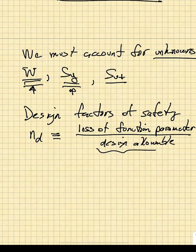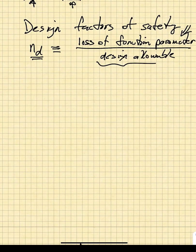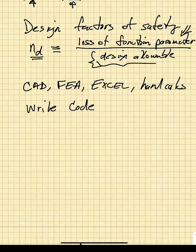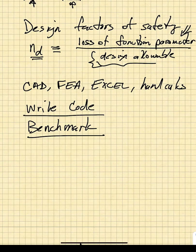You, the designer, choose the maximum parameter size you want. The loss of function parameter is a property of the system — you want it to be greater than the design allowable so that the factor of safety is greater than one. Throughout this class, we will use computer-aided design, finite element analysis, Excel spreadsheets, and hand calculations, all to help us properly choose design allowable loads that will prevent failure from occurring in our systems. We will also write code, run code, and benchmark that code against known answers so that we are confident that we have gotten the code correct.